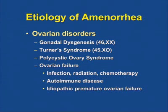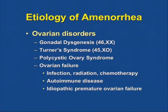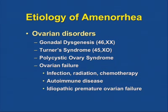Polycystic ovary syndrome (PCOS) is thought to involve insulin resistance. Girls may have ovarian cysts, elevated androgen levels, and amenorrhea or oligomenorrhea, making it one of the most common causes of secondary amenorrhea. Other causes of ovarian failure include infection, history of chemotherapy or radiation, autoimmune disease, and idiopathic premature ovarian failure—which is going through menopause before age 40.